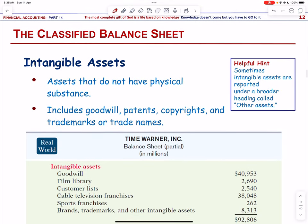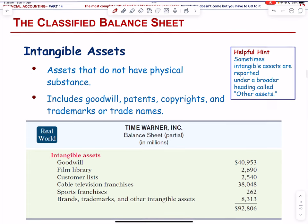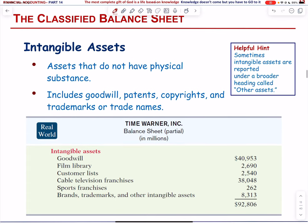Intangible assets — also called other assets in some balance sheets — do not have a physical substance like furniture or equipment. Examples include goodwill, patents, copyrights, trademarks, and trade names.